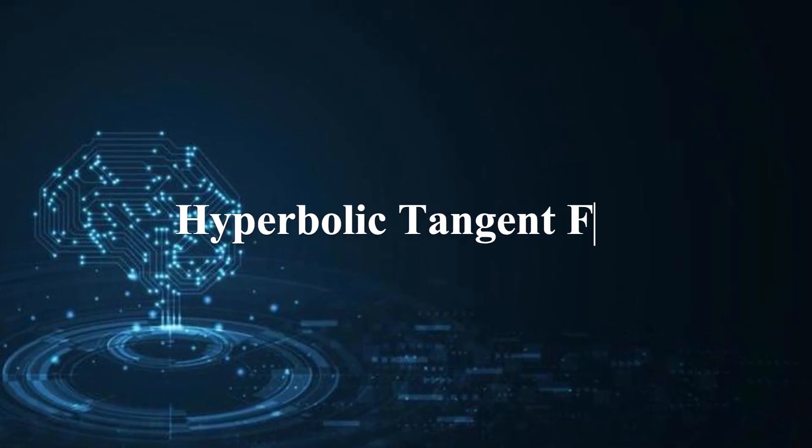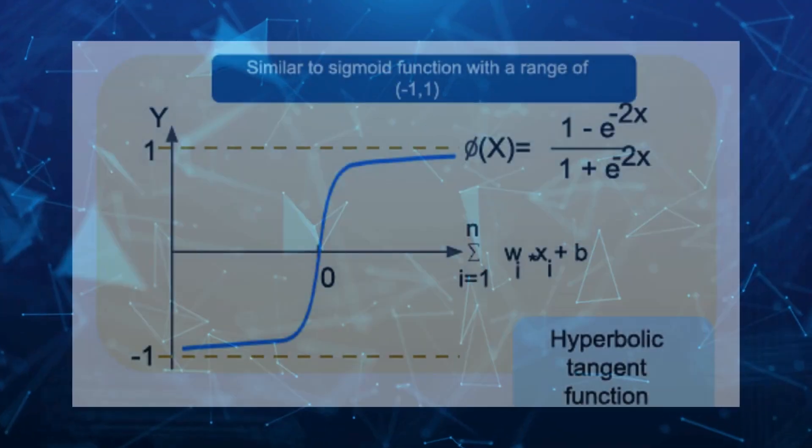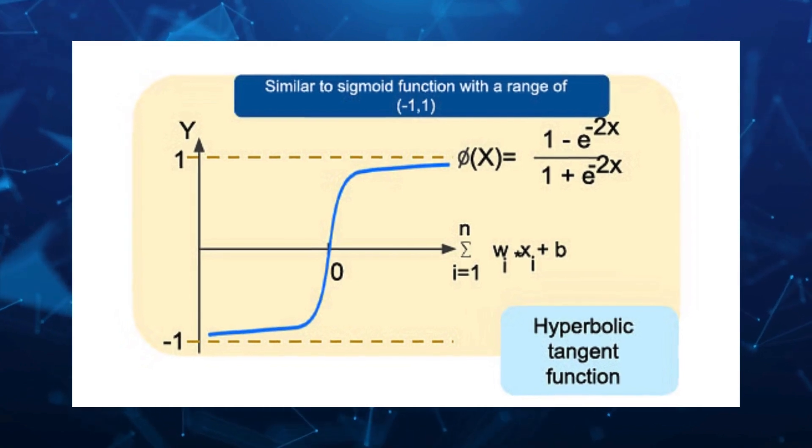The hyperbolic tangent function is similar to the sigmoid function, but has a range of minus one to one.